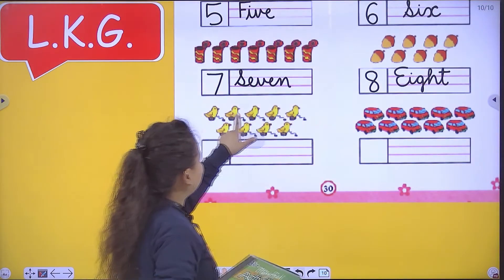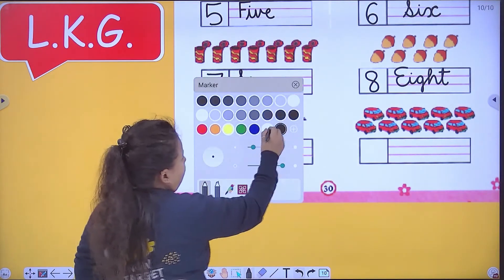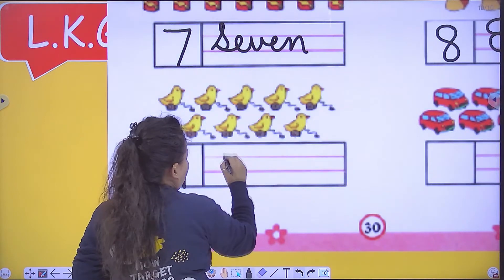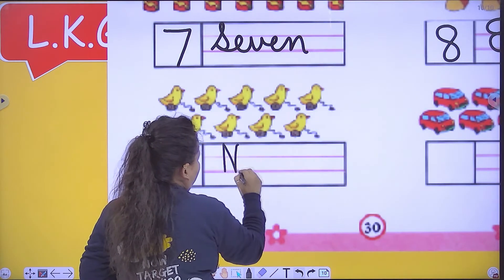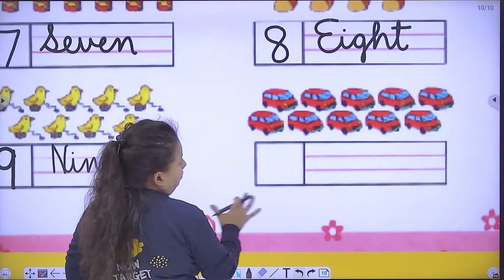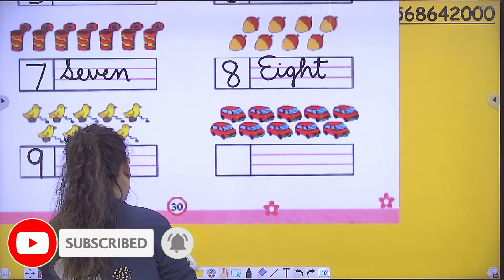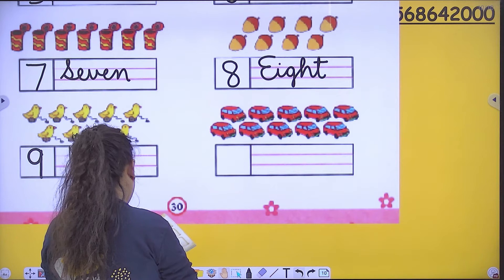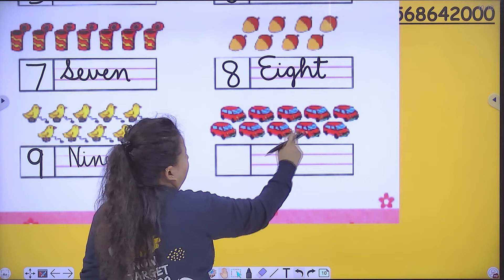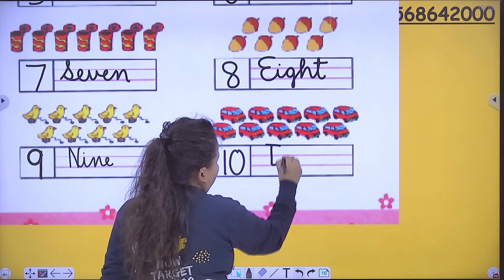Number of toys: one, two, three, four, five, six, seven, eight, nine. Nine. Number of toys: one, two, three, four, five, six, seven, eight, nine, ten. Ten — T E N, ten. Okay.